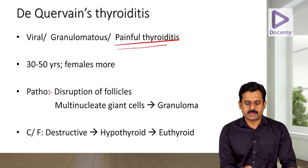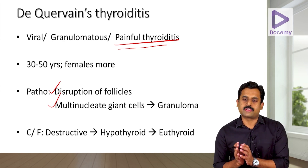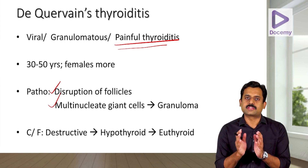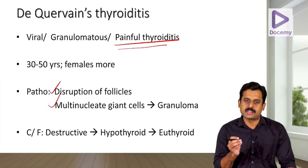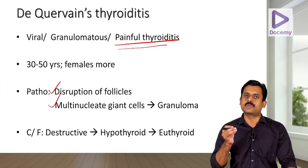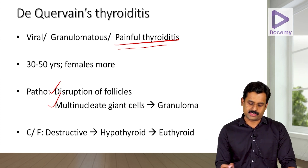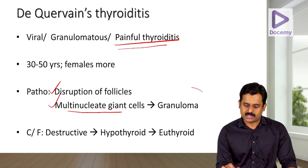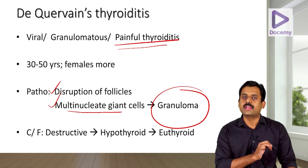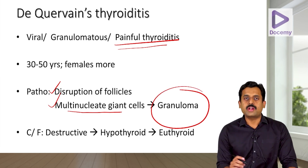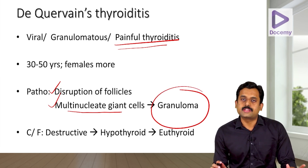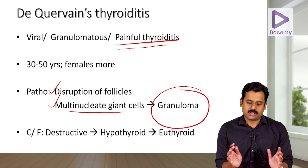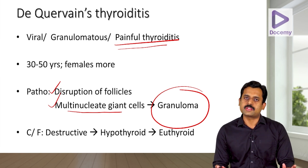Regarding pathology, in de Quervain's thyroiditis there is disruption of the thyroid follicles with release of stored thyroid hormone into the circulation. The second feature is multinucleate giant cell accumulation, ultimately leading to granuloma formation.